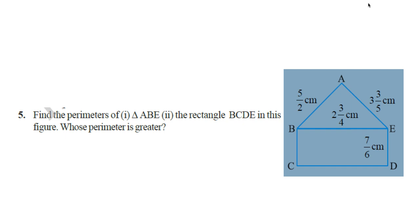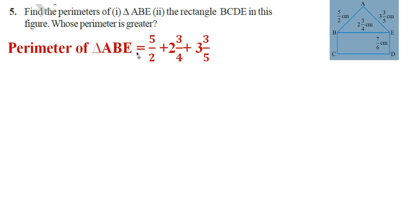So the first step: perimeter of triangle ABE is equal to 5/2 plus 2 3/4 plus 3 3/5. Here you can find two mixed fractions: 2 3/4 and 3 3/5. Now change them into improper fractions.